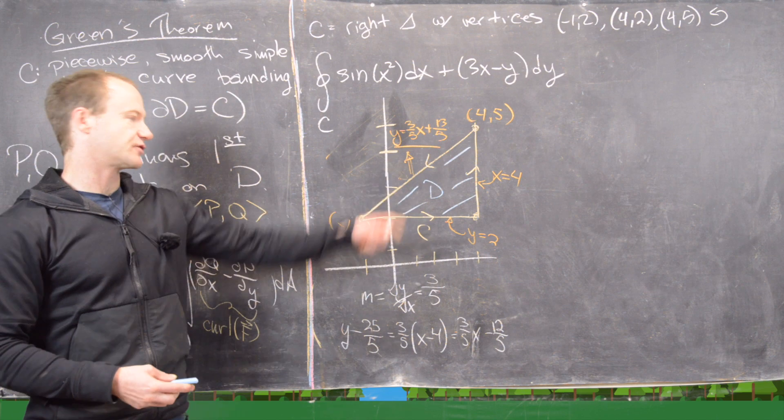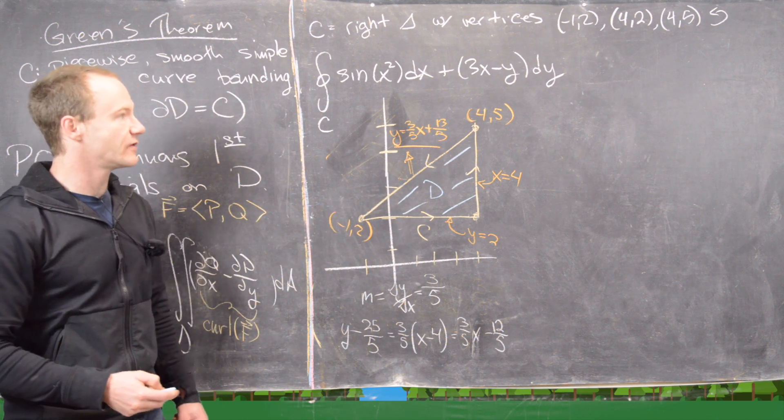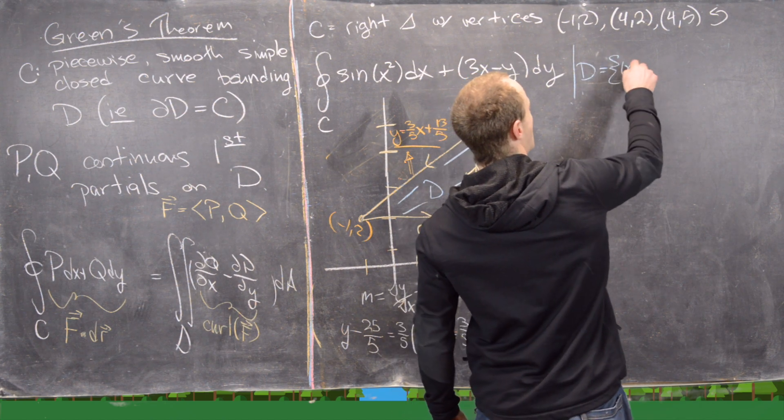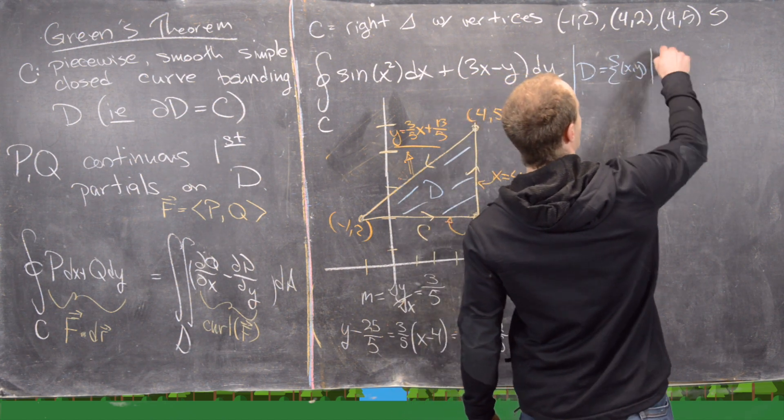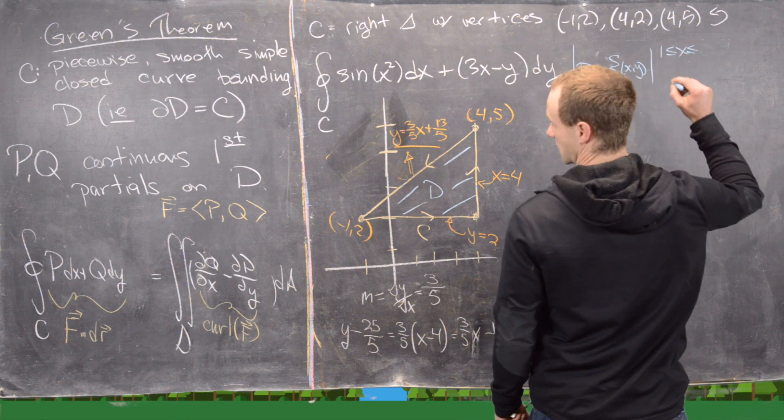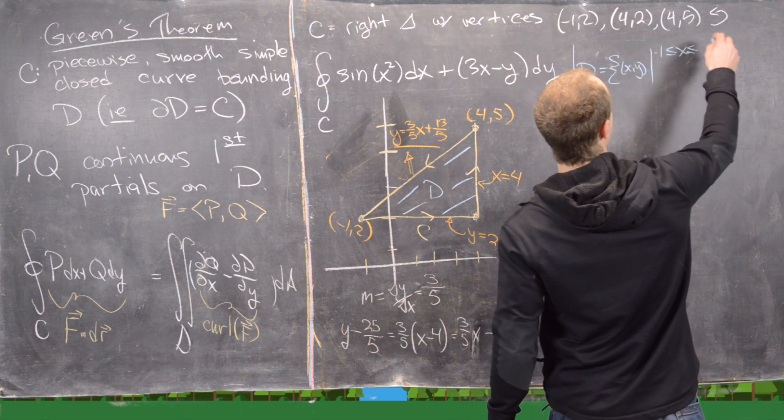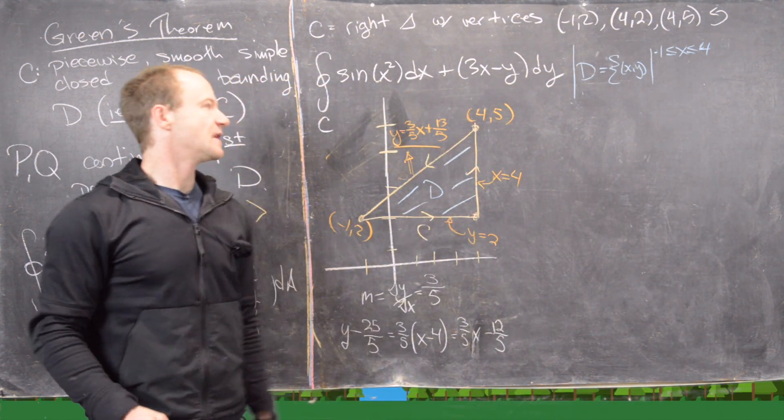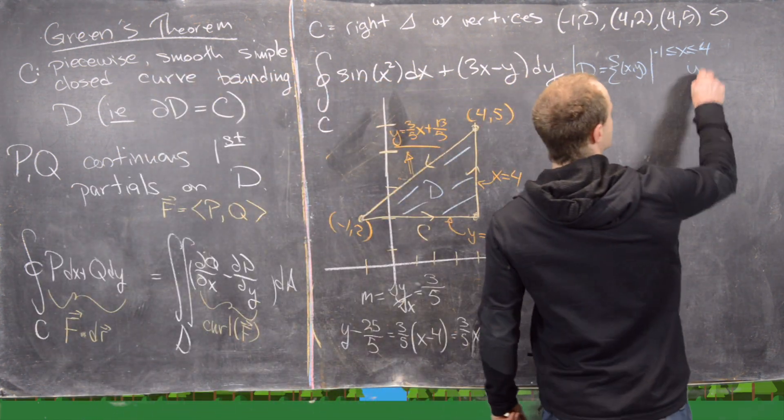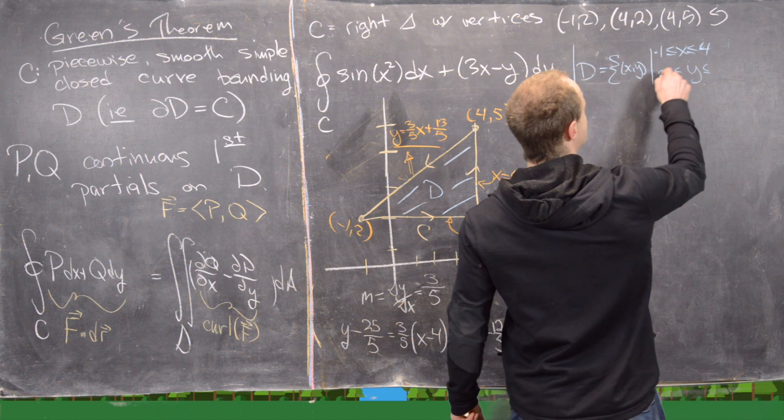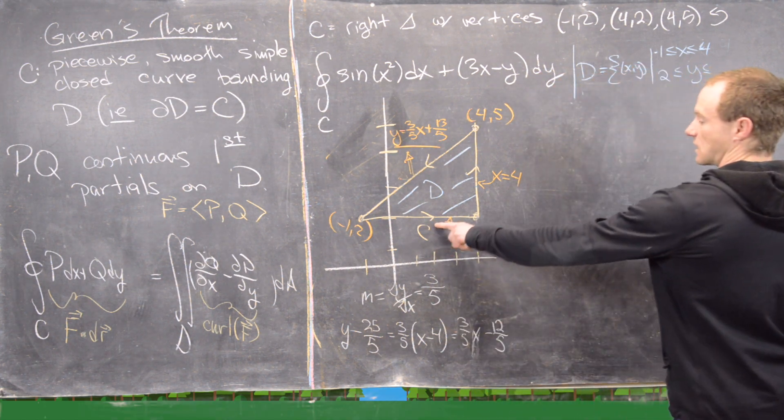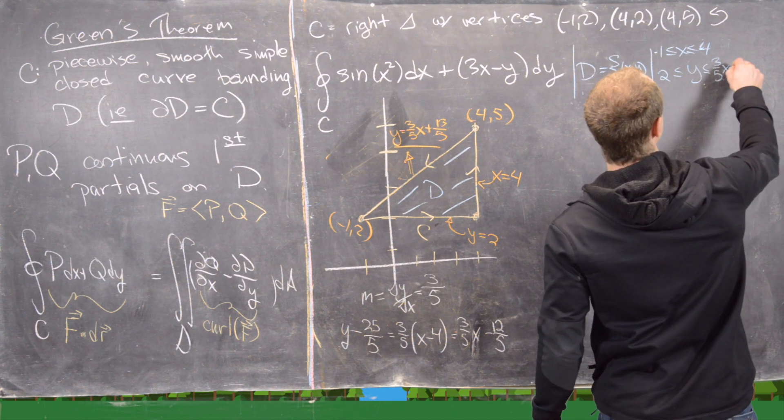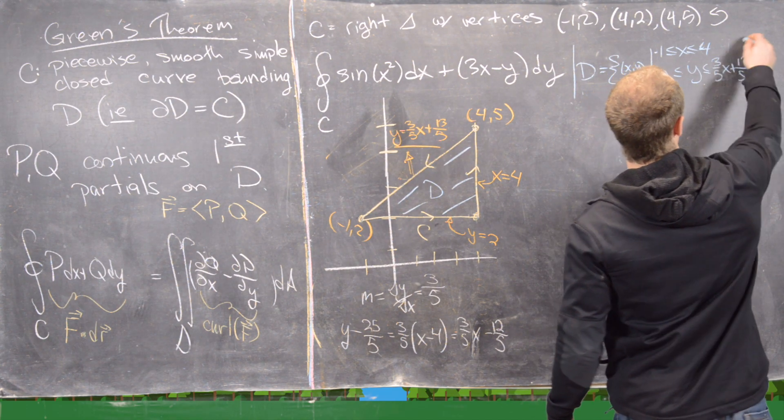That allows us to write this region D as a type one region in a pretty easy way. Notice that D is equal to all points (x,y) where x is running between -1 and 4, and y is running between 2, which is this horizontal line down here, and this slanted line up here, which is (3/5)x + 13/5.